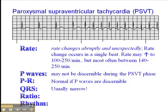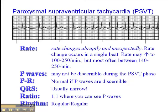The QRS is usually narrow — and I put an exclamation mark there — because if you saw a sinus rhythm and then a tachycardic phase with a wide QRS without discernible P waves, we would have to assume that's a ventricular tachycardia. But since the QRS is narrow, we can say this is a PSVT rather than a VT. The ratio is 1 to 1 where we can see P waves, and the rhythm is regular in the underlying sinus rhythm.